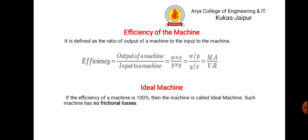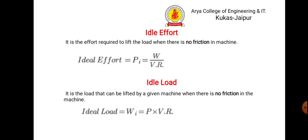Then ideal machine: a machine that has 100% efficiency, meaning there is no frictional loss. Then ideal effort: it is the effort required to lift the load when there is no friction. Ideal effort P_i = W / VR. Then ideal load: it is the load that can be lifted by a given machine when there is no friction. Ideal load W_i = P × VR.